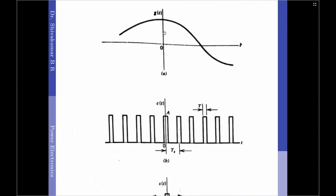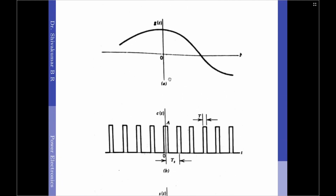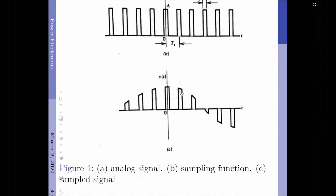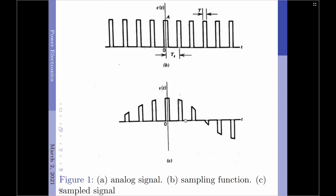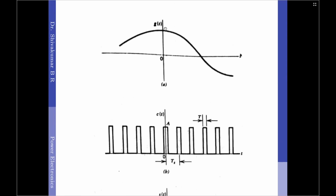This is our analog signal G(t), this is our sampling function C(t), and this is our sampled signal S(t). By looking at the sampled signal, we can observe that the switching operation simply extracts the analog signal G(t) in successive portions of predetermined duration capital T, taken at regular intervals T_s. In simple words, wherever there is a rectangular pulse, the input signal is retained at the output. Whenever the sampling signal is 0, the sampled signal is also 0. Therefore, the sampled signal S(t) consists of a sequence of positive and negative pulses.